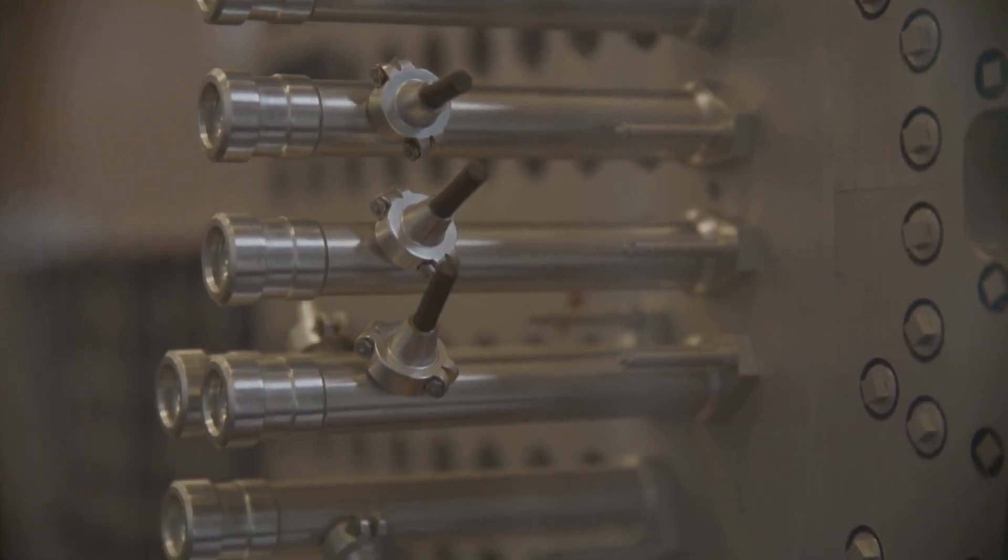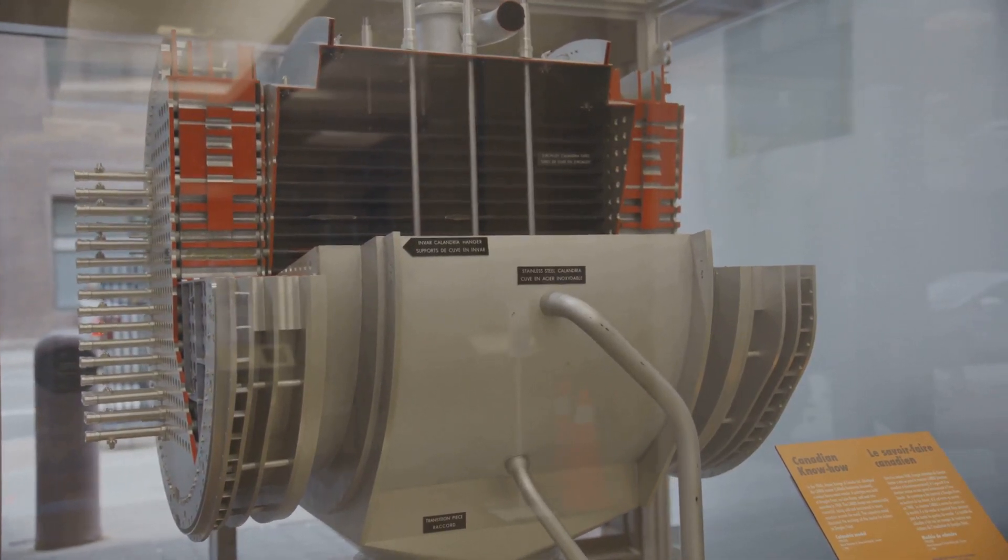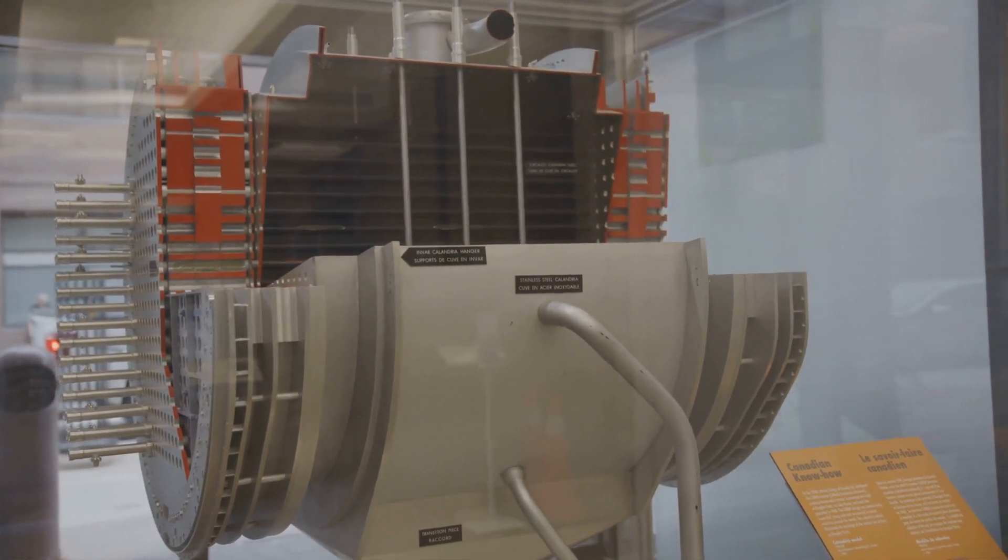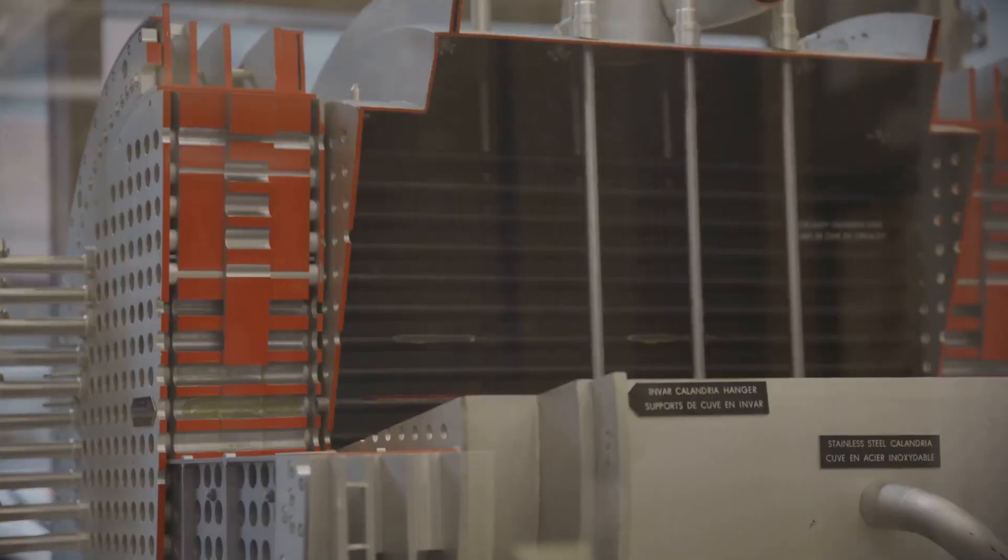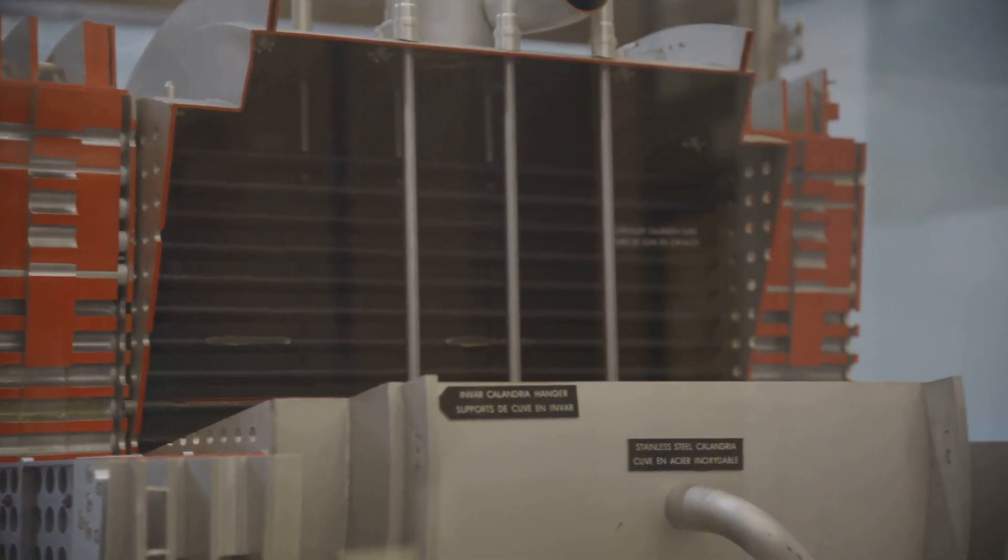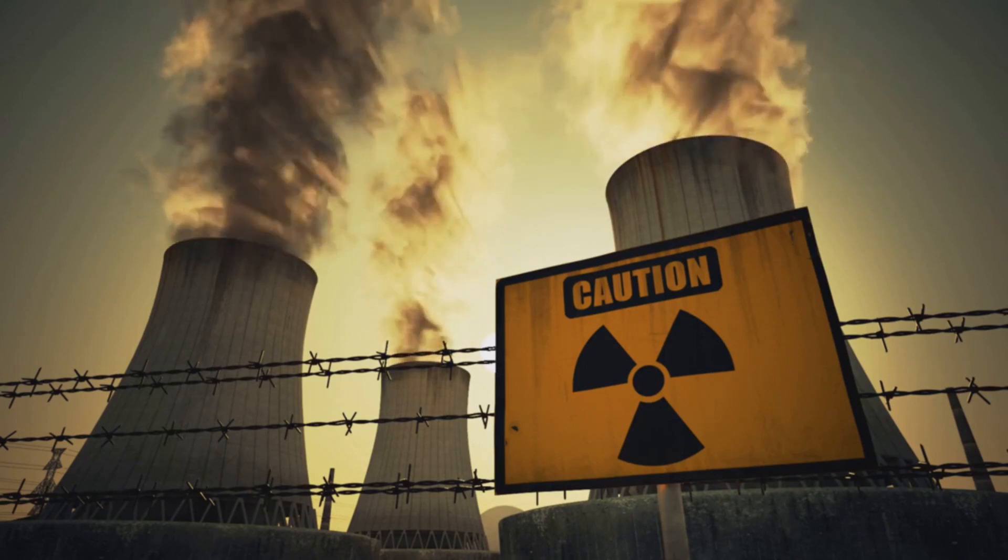Once separated, this plutonium-239 becomes an incredibly potent source of energy. One of its primary uses is as fuel in certain types of nuclear reactors. When an atom of plutonium-239 is struck by a neutron, it can split apart in a process called fission. This splitting releases a tremendous amount of energy as heat, along with more neutrons.